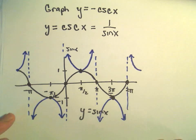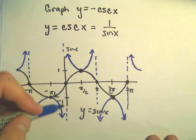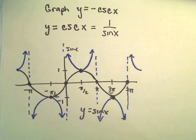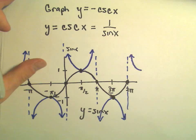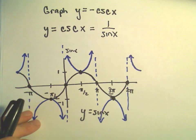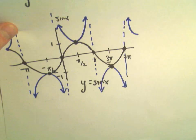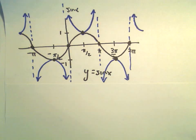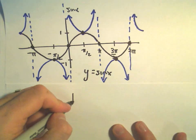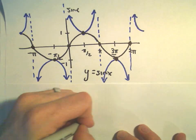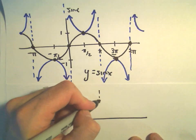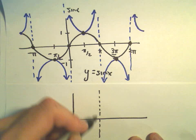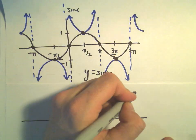In blue, the one going off to infinity and down to negative infinity — that would be the graph of cosecant x. Now if we wanted to graph y equals negative cosecant x, remember all that does is reflect the graph about the x-axis, with asymptotes still at pi and 2 pi.